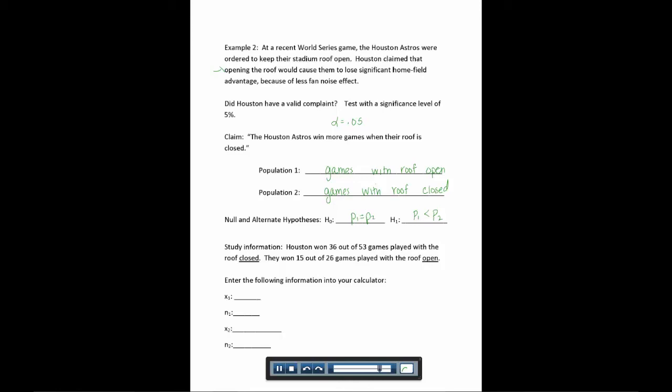So we're told that they won 36 out of 53 games with the roof closed. Now roof closed was population 2, so we'll put those in X2 and N2. So 36 out of 53 in our calculator. And they won 15 out of 26 with the roof open.